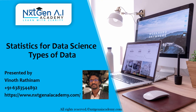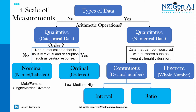Hello everyone, welcome to NextGen AI Academy, hope you are doing good. In the previous video we learnt about categorical data. The best way to find whether it's categorical data or not is by checking whether we can perform arithmetic operations or not. If we can't perform any arithmetic operation then we consider that data as categorical data.